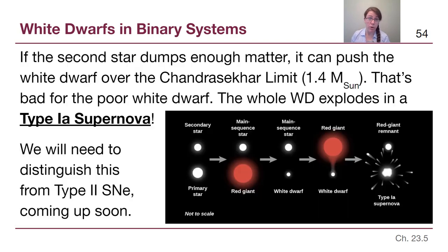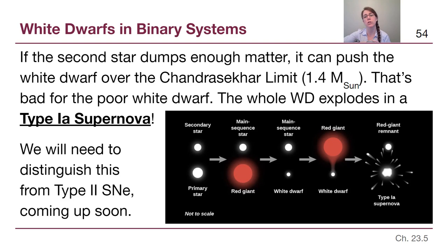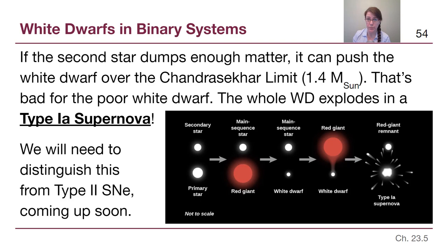However, if the white dwarf was already close to the Chandrasekhar limit and the second star dumps too much matter, that is extremely bad news for the white dwarf. The entire white dwarf explodes in a type 1a supernova.